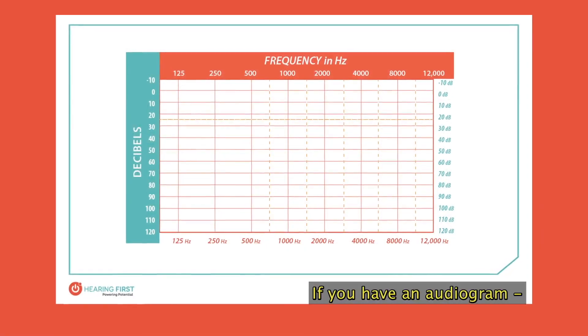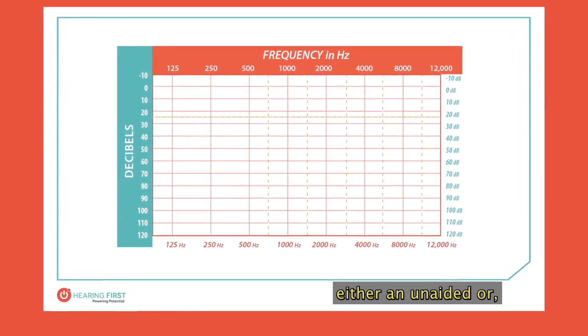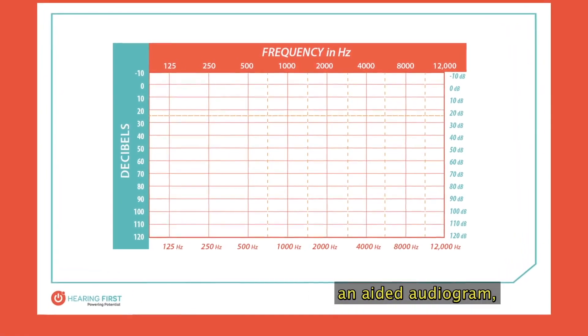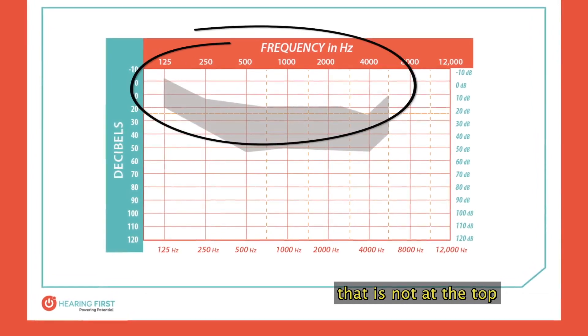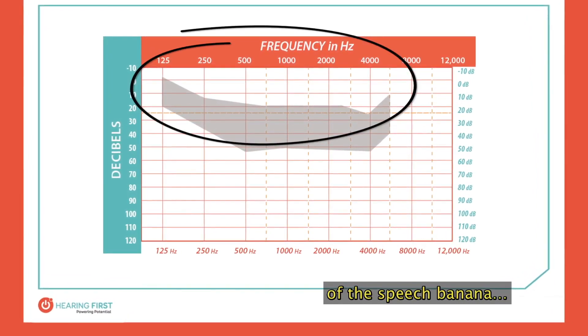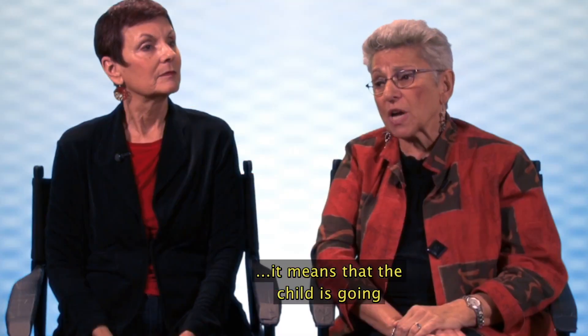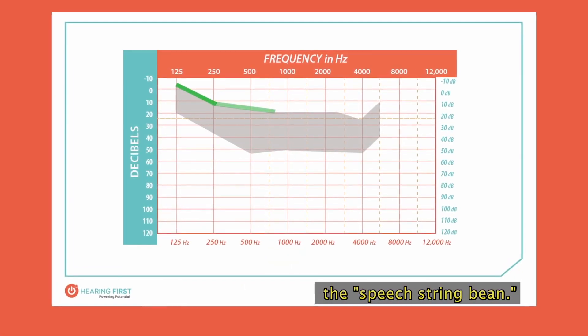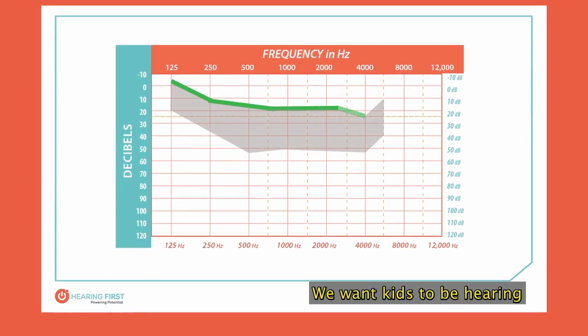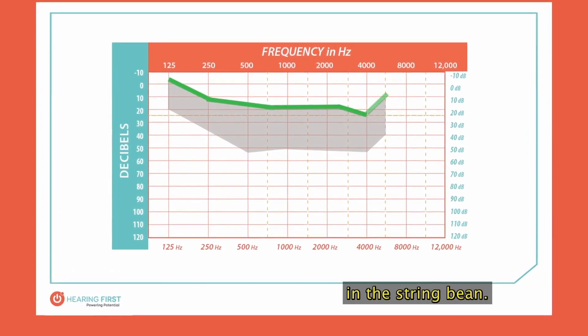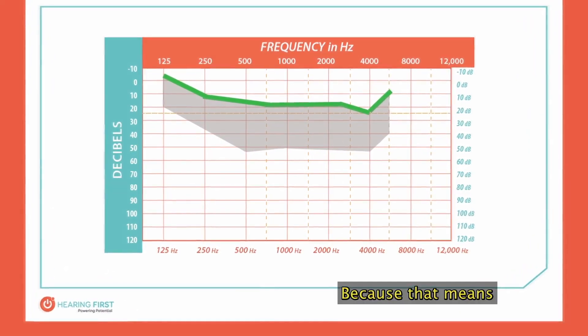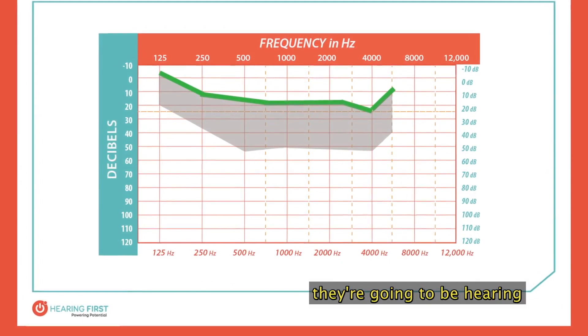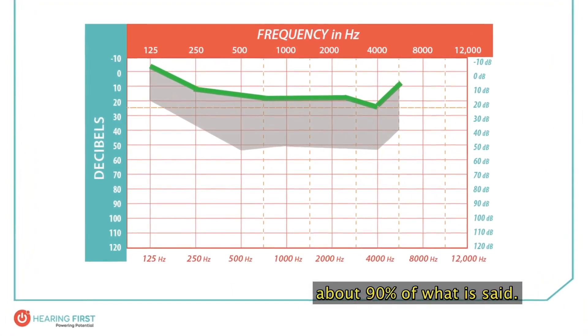If you have an audiogram, either an unaided or, even worse, an aided audiogram, that is not at the top of the speech banana, it means that the child is going to be missing a lot of information. So what we have here is what we would like to call the speech string bean. We want kids to be hearing in the string bean because that means they're going to be hearing about 90 percent of what is said.